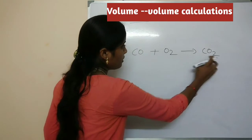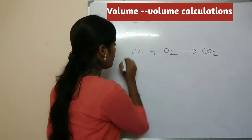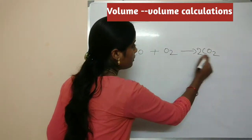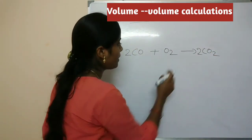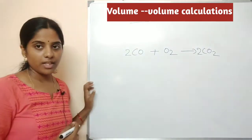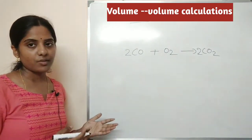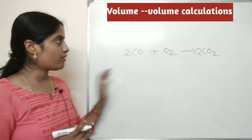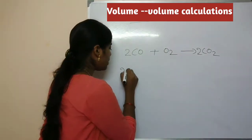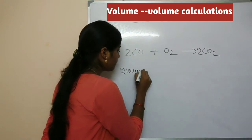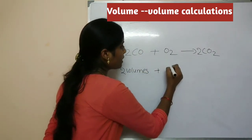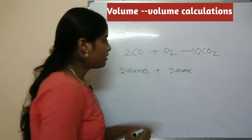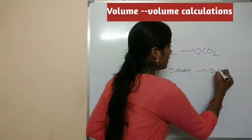Balancing: 1 carbon on the left, oxygen is imbalanced, so we get the ratio 2 to 1 to 2 — meaning 2 carbons, and the equation is balanced. Since we have no mass given, only volume-volume terms apply: 2 volumes of carbon monoxide reacted with 1 volume of oxygen can form 2 volumes of carbon dioxide.